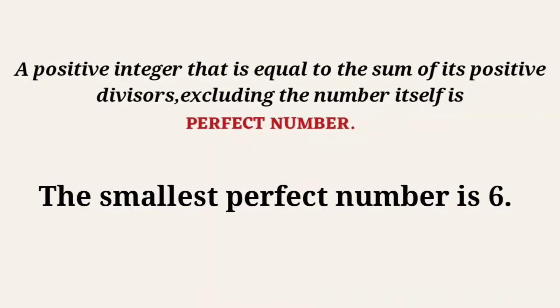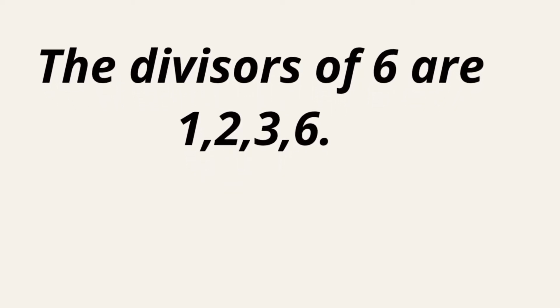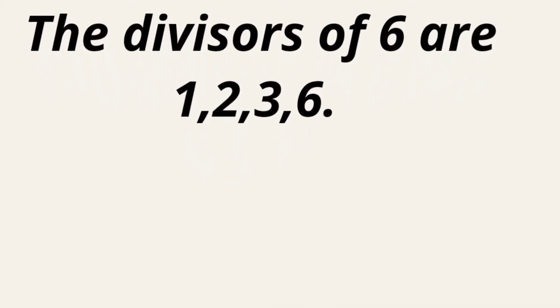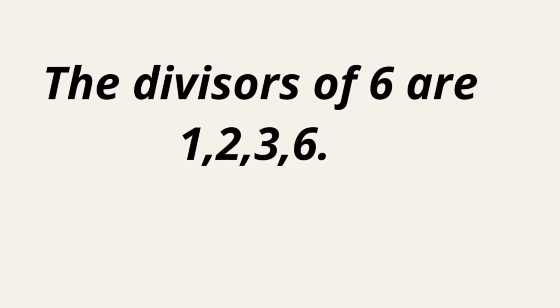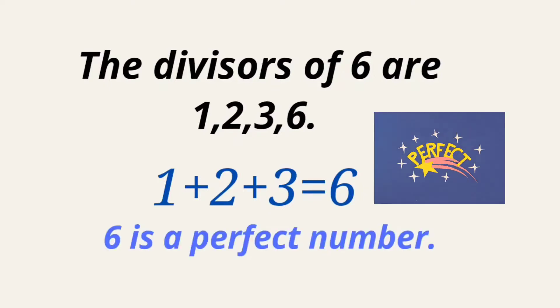The smallest perfect number is 6. The divisors of 6 are 1, 2, 3, and 6. A divisor is a number that divides another number. The sum of 1, 2, and 3 is 6. Therefore, 6 is a perfect number.